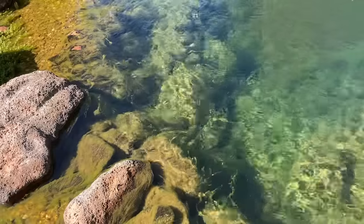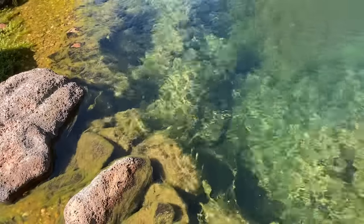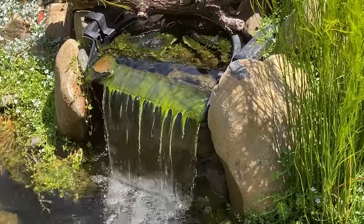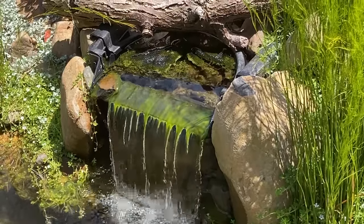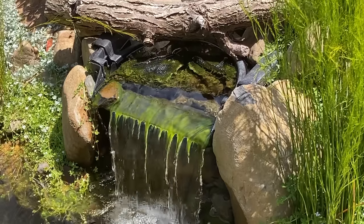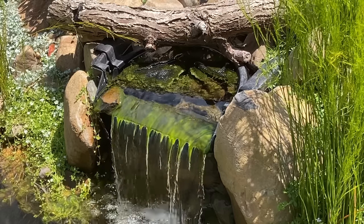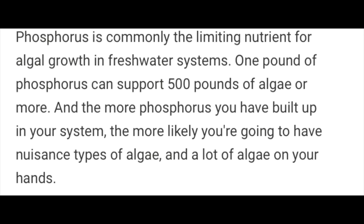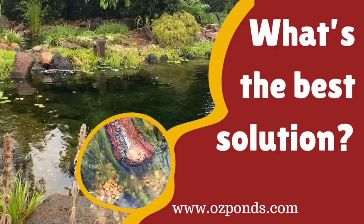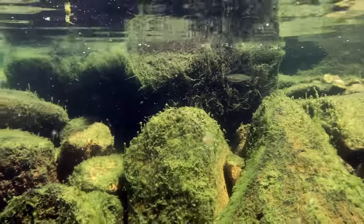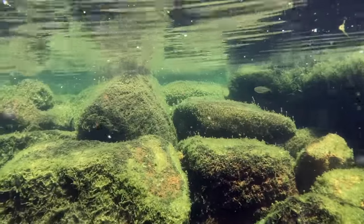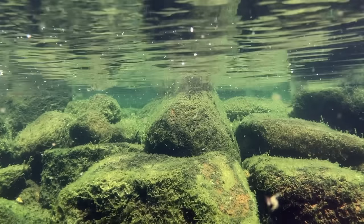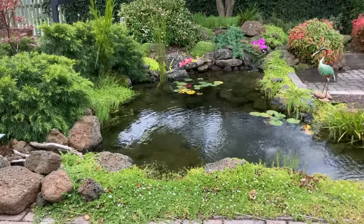Now the algae that causes green water is very different to the stringy type of algae that grows on rocks and plants — you might also often have it grow on your waterfalls and in your streams. This type of algae tends to feed more on phosphorus. Your water can be crystal clear yet you'll still have the stringy algae. I recently read that one pound of phosphorus can support 500 pounds of algae, so even a small amount of phosphorus in the pond can cause a lot of stubborn stringy algae. I recently made a video on some of my struggles with stringy algae, so I'll link that in the description as well — it covers some natural solutions and some nuclear solutions if you're at the end of your tether.